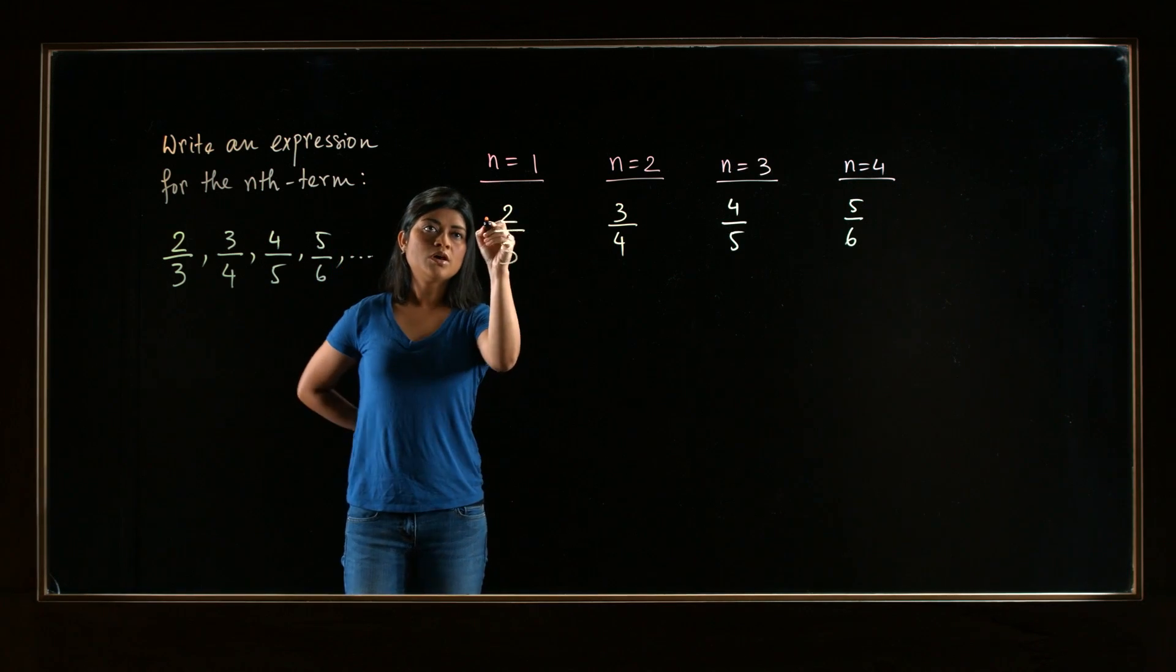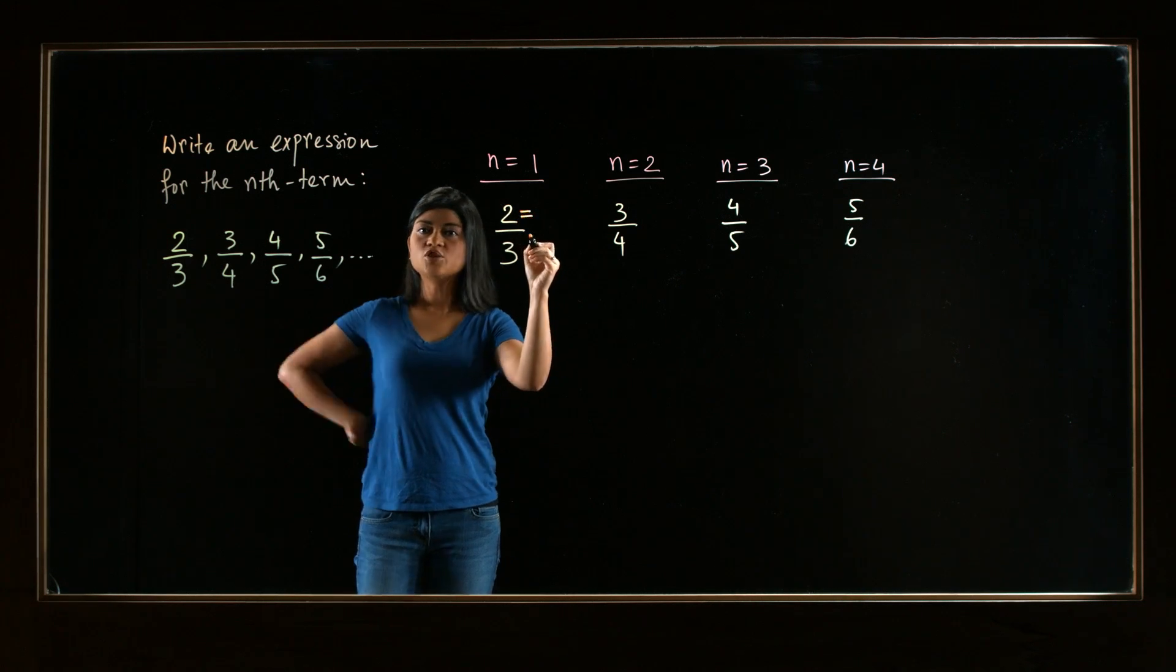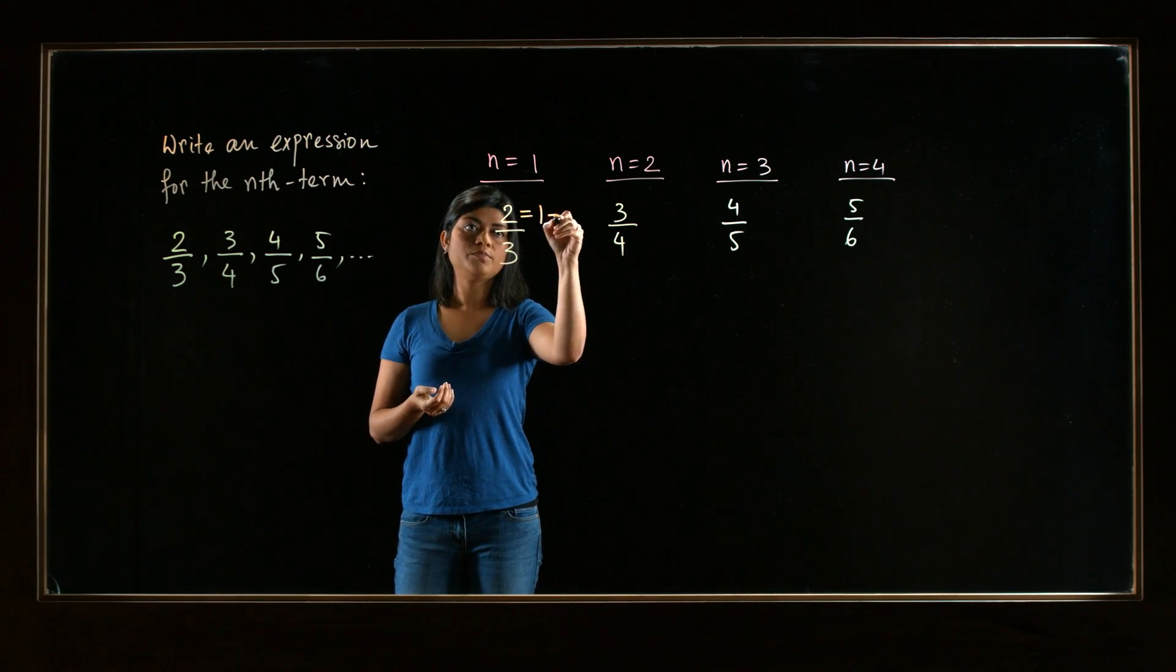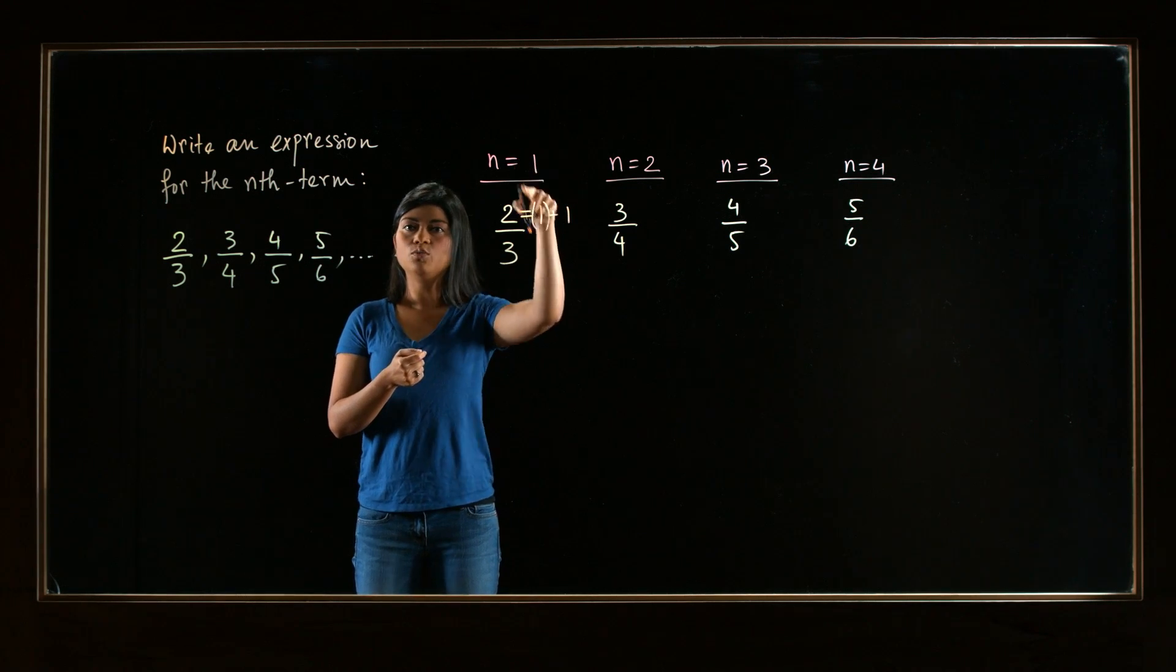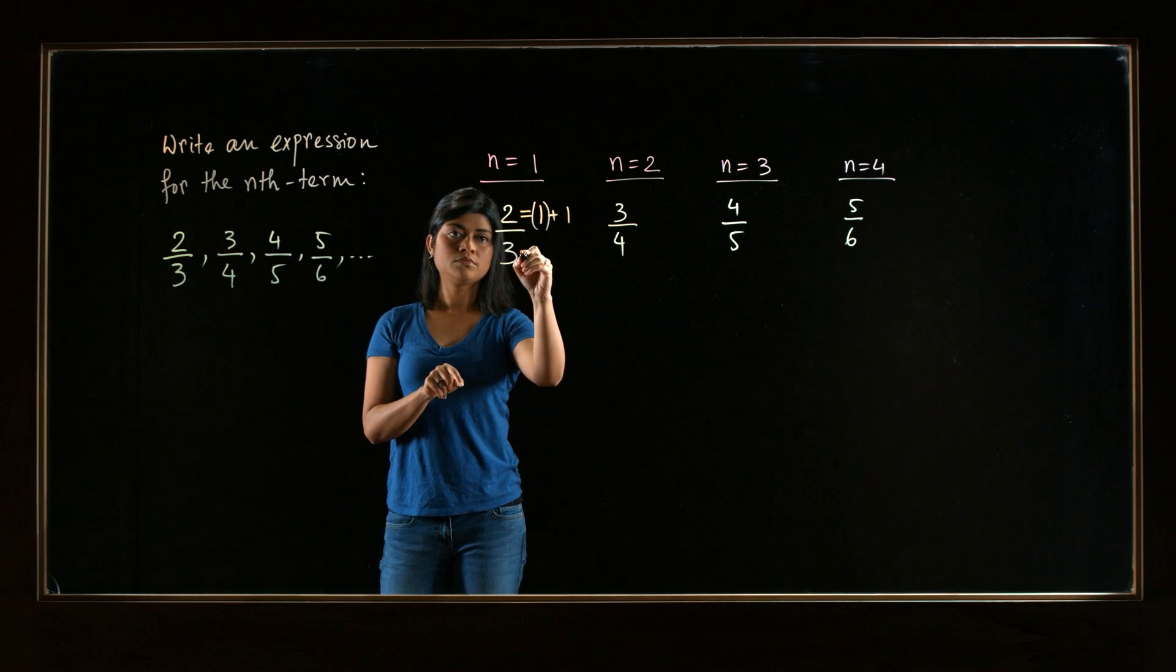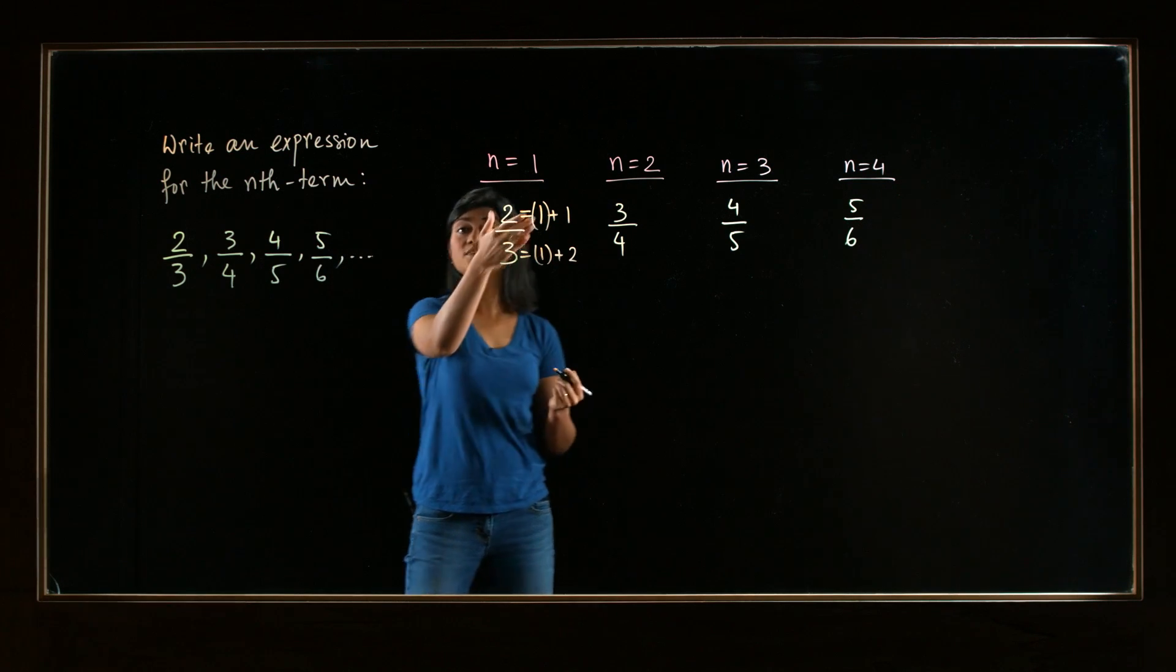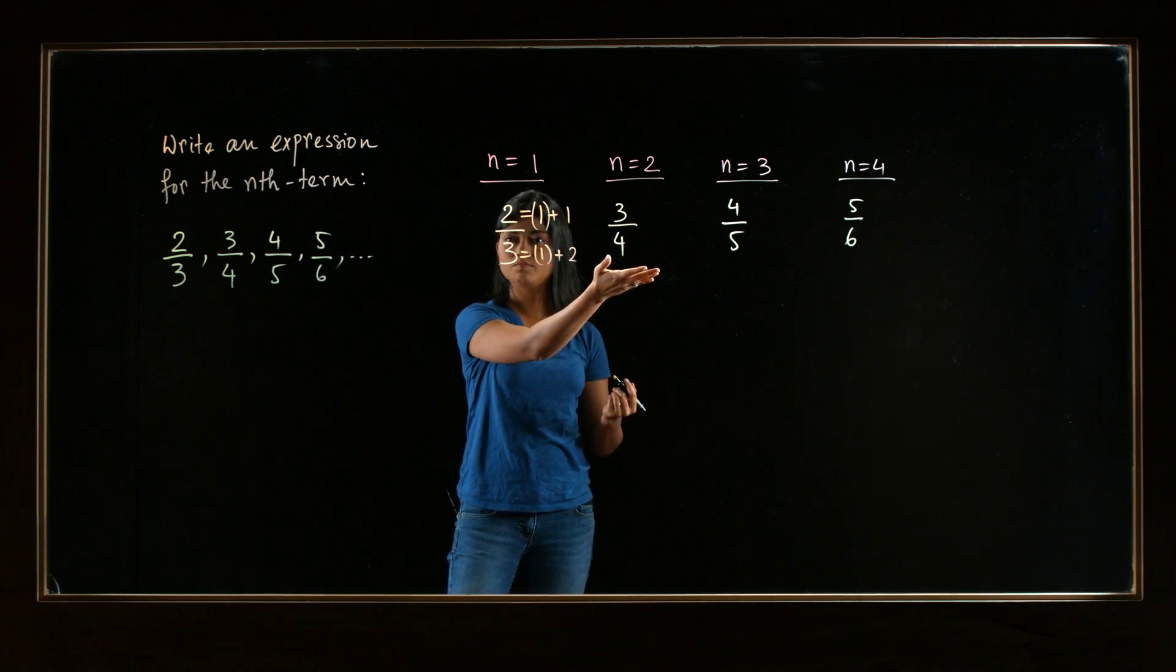For the first one, how can we write 2? Just look at the numerator in terms of 1. Well, obviously, it's 1 plus 1. So 1 plus 1, and let's say this 1 is the n value, 1. How can I write 3, then, in terms of 1? Well, 3 is 1 plus 2. Let's see if a similar pattern follows for the next number or not.